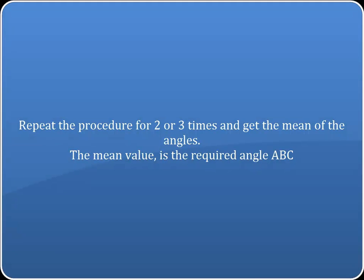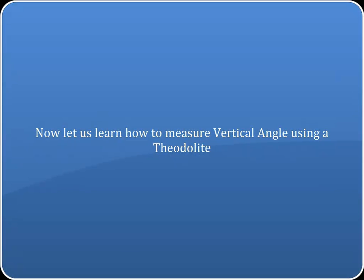Repeat the procedure for two or three times and get the mean of the angles. The mean value is the required angle ABC. Now, let us learn how to measure vertical angle using a theodolite.